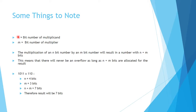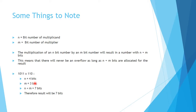Some things to note: we'll use small n to represent the bit number of the multiplicand, and small m to represent the bit number of the multiplier. The multiplication of an n-bit number by an m-bit number will result in a number with n plus m bits. This means there will never be an overflow — an overflow being a situation where you have more bits than space allocated — as long as we allocate n plus m bits for the result. For example, 1011 multiplied by 110: n is 4 bits, m is 3 bits, so n plus m is 7 bits, and the result will never be more than 7 bits.